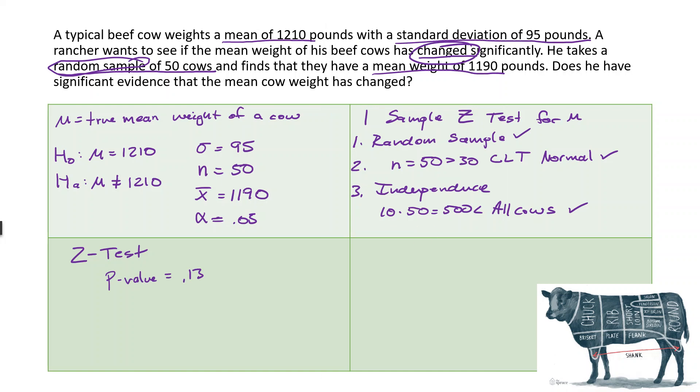So it looks like it's a lot lower, like it's 20 pounds lower. But apparently that is not significant enough here. Because 0.13 is greater than 0.05. So we do not reject the H0. We don't have significant evidence that the mean has changed. So the mean is still probably pretty close to 1210. It has not significantly changed.